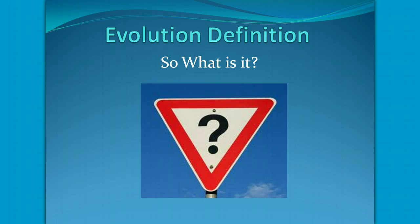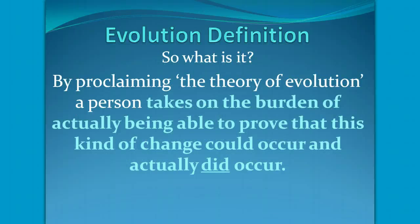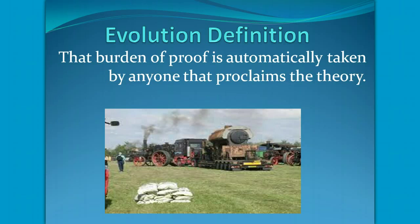Well, then, what is it? It is change that causes one kind of creature — that is organism, plant, insect, etc. — to change to a completely different kind of creature. By proclaiming the theory of evolution, a person takes on the burden of actually being able to prove that this kind of change could occur, and actually did occur.